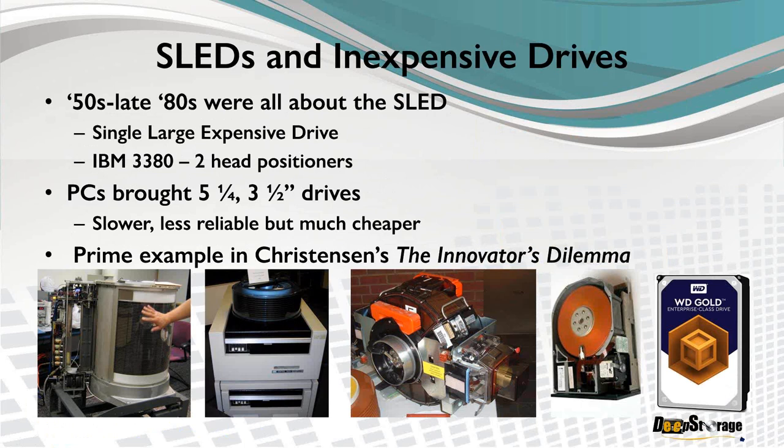PCs — the toys we used back then based on the Intel x86 processors — used five-and-a-quarter and three-and-a-half inch drives. They were somewhat less reliable than the 3380s and the washing machines, but they were much less expensive. Clayton Christensen, in his classic book The Innovator's Dilemma, used the disk drive industry as an example of disruption — how products which came to market as technically inferior but much less expensive, like the ST506 disk drive, would evolve to replace the much more expensive, more capable systems. And this is exactly what happened in the disk drive business.